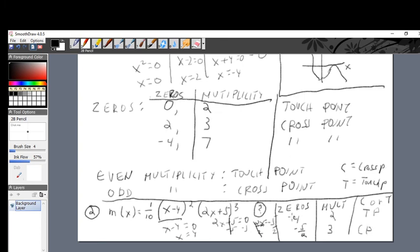So, that means 4, 0 is a touchpoint. And negative 5 halves, 0 is going to be a crosspoint on this graph. And that's exactly what went over here. This 0 means at 0, 0, we have a touchpoint.